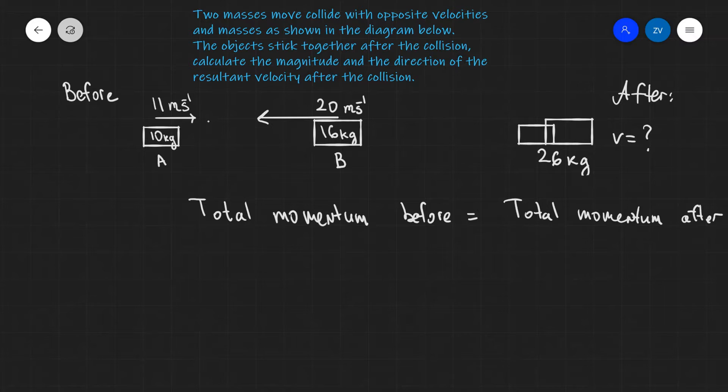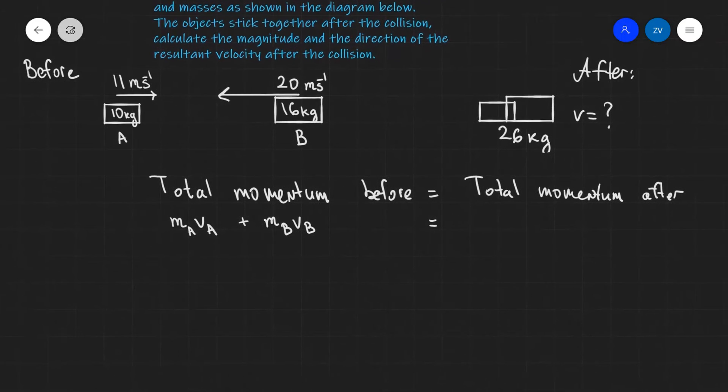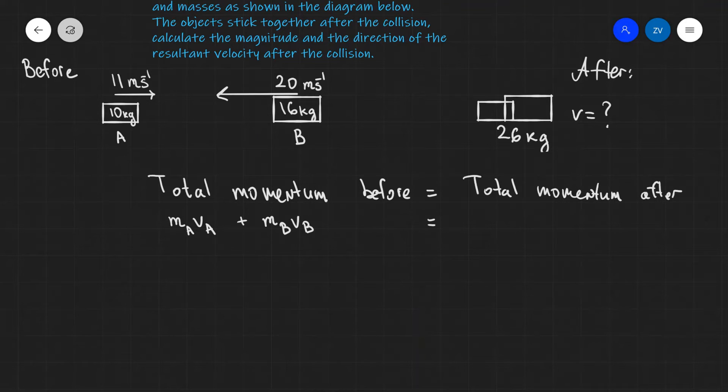The total momentum before will be the sum of the momentum of object A and object B. So this will be equal to ma times va plus the mass of object B times the velocity of object B, mb times vb. This will be equal to our total momentum after the collision.